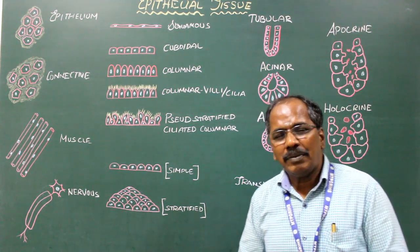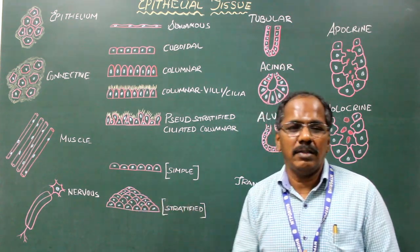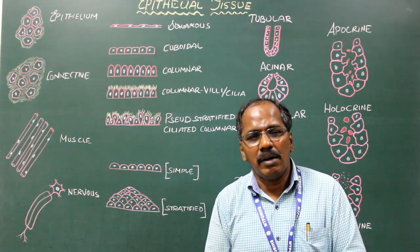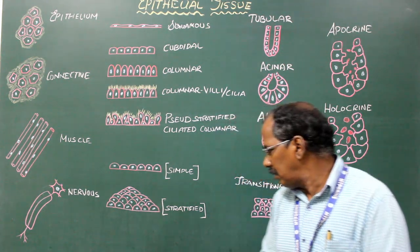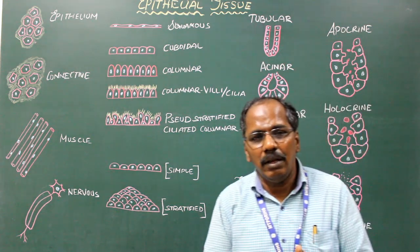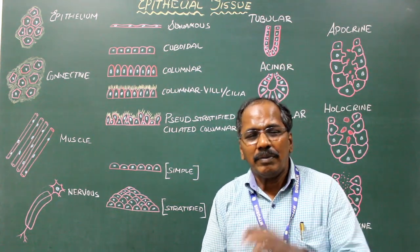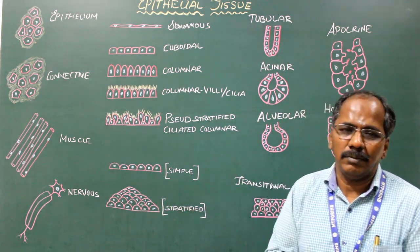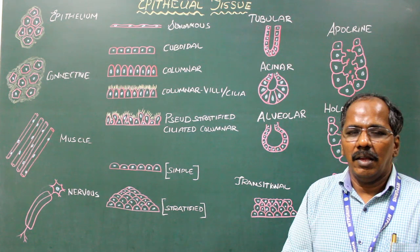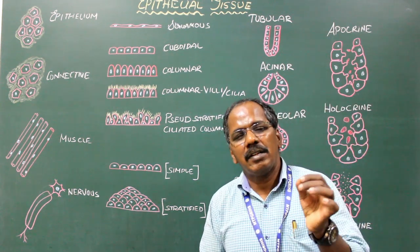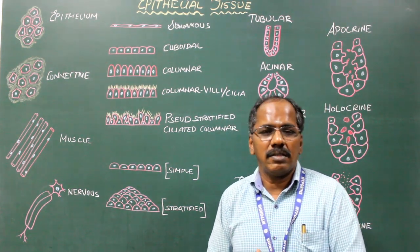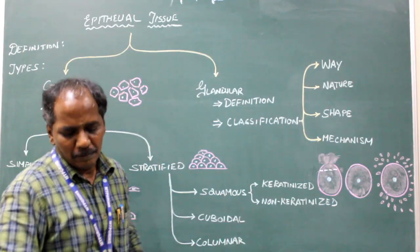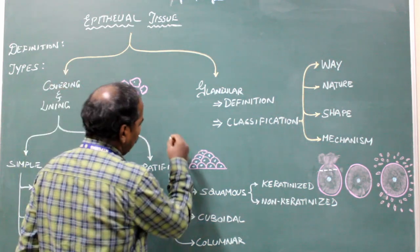In stratified cuboidal epithelium, the superficial-most cells are cuboidal. Examples include seminiferous tubules and ducts of sweat glands. In stratified columnar epithelium, the superficial-most cells are columnar. Examples include ducts of large glands such as salivary glands, and the conjunctiva.